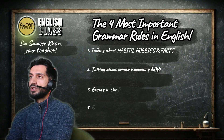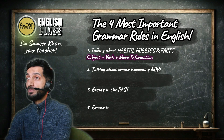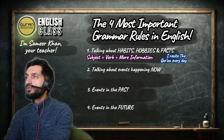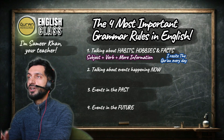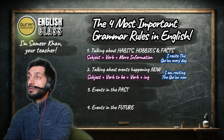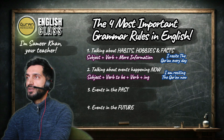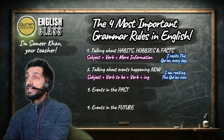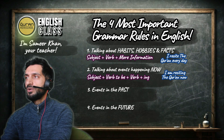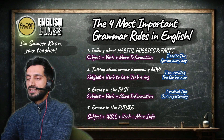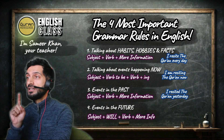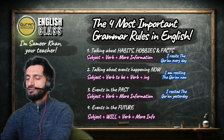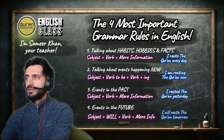Number one is present simple — how to talk about habits: I recite the Quran every day. Subject, verb, more information. Number two: subject plus verb to be plus verb plus -ing: I am reciting the Quran now. Number three: I recited the Quran yesterday. Number four is like number one, just add will: I will recite the Quran tomorrow.